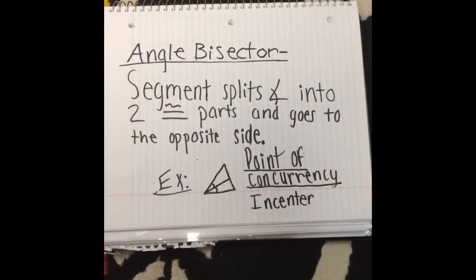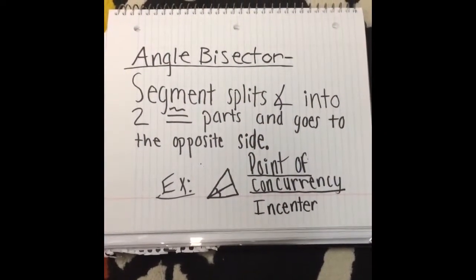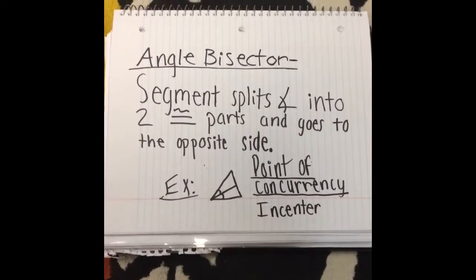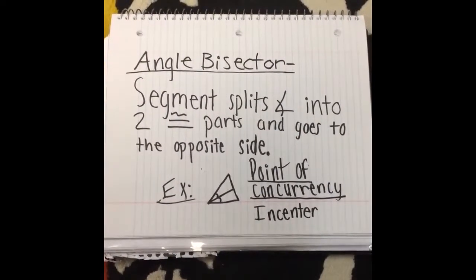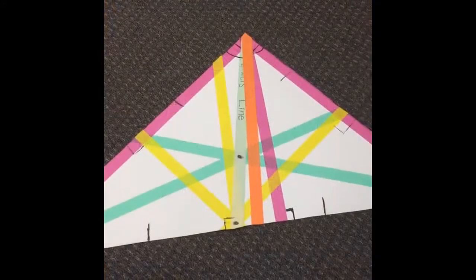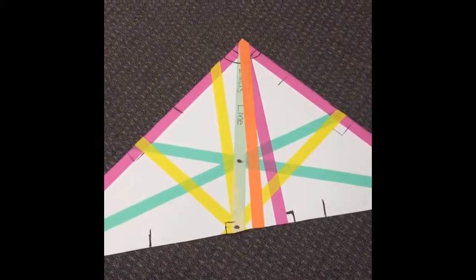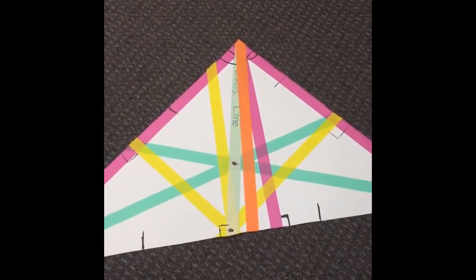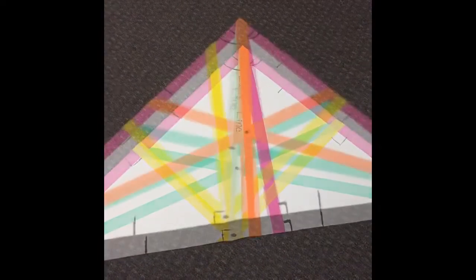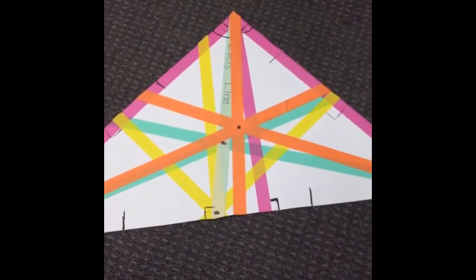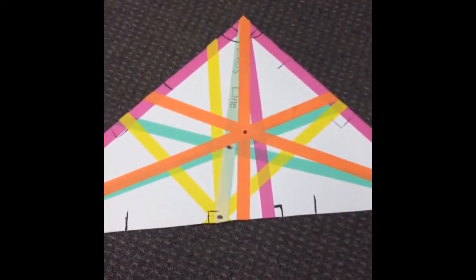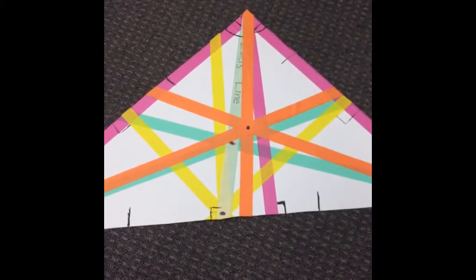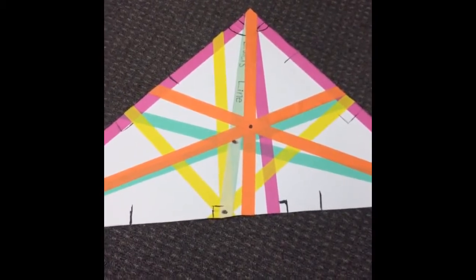An angle bisector is a segment that splits the angle into two congruent parts and goes to the opposite side. The point of concurrency is the incenter. The orange segment represents the angle bisector — you know this because it splits the angle into two congruent parts and goes to the opposite side of the triangle. The point of concurrency for the three angle bisector segments is the incenter. This is the point of concurrency that is not on Euler's line.